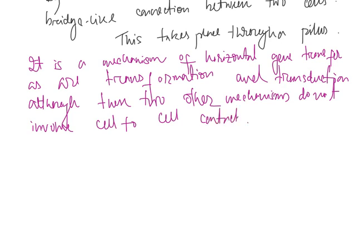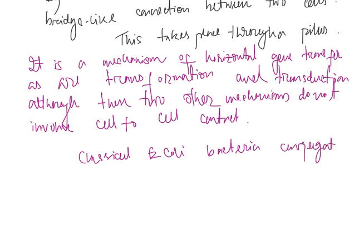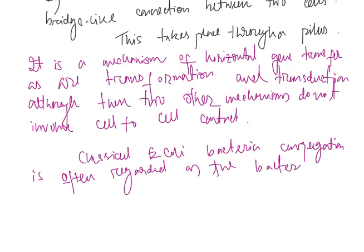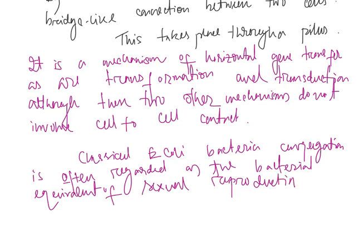Now, classical E. coli bacterial conjugation is often regarded as the bacterial equivalent of sexual reproduction, or mating, since it involves the exchange of genetic material.